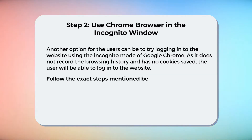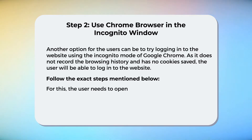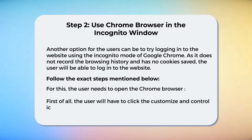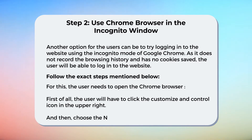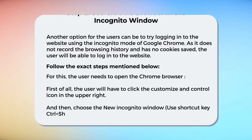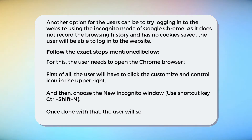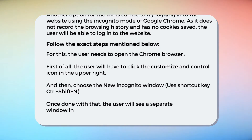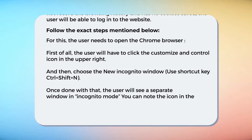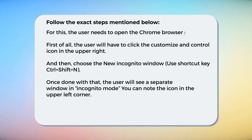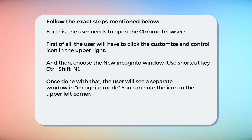Follow the exact steps mentioned below. The user needs to open the Chrome browser. First, click the Customize and Control icon in the upper right, then choose the New Incognito Window — use the shortcut key Control + Shift + N. Once done, the user will see a separate window in incognito mode; you can note the icon in the upper left corner.